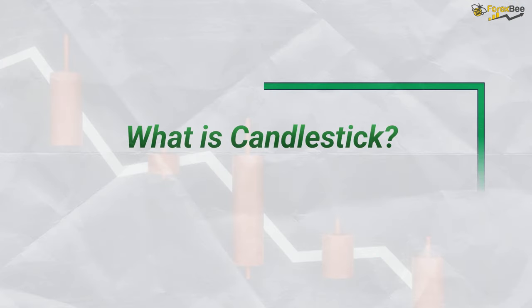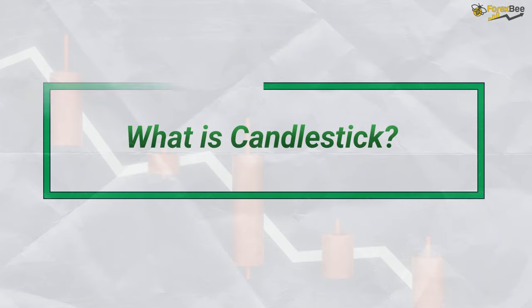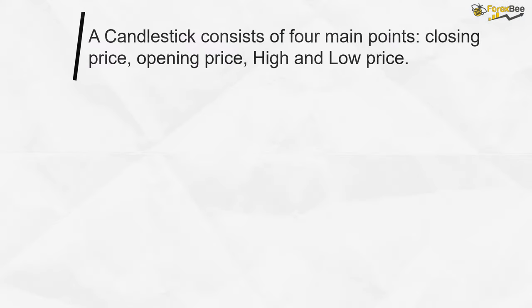So now that you know the importance of learning candlestick patterns, let's get started. First of all, let's learn the anatomy of a regular candlestick. A candlestick consists of four main parameters: closing price, opening price, and high and low prices.